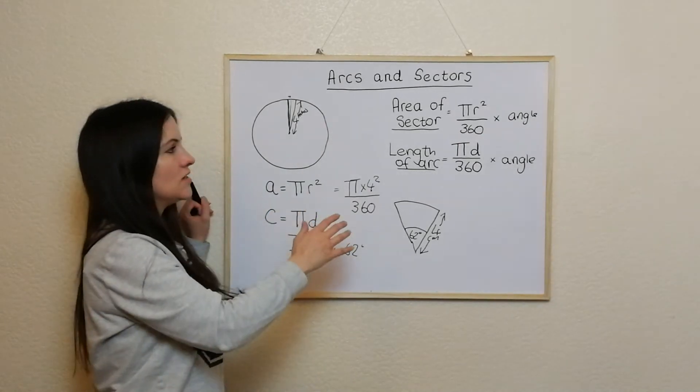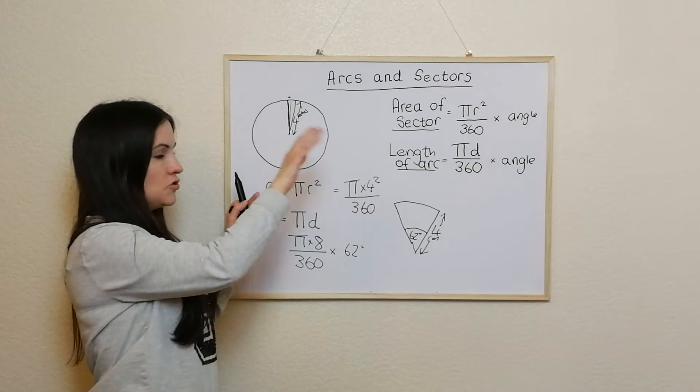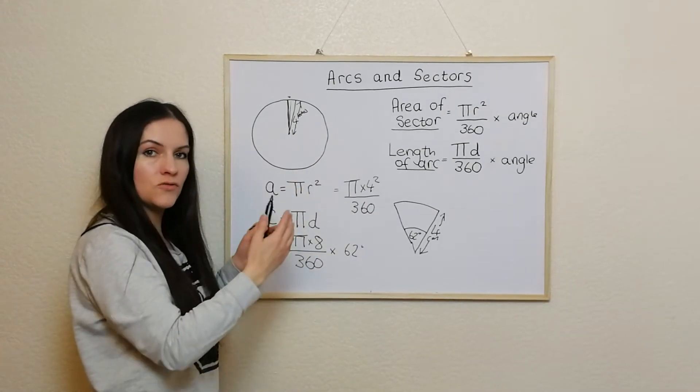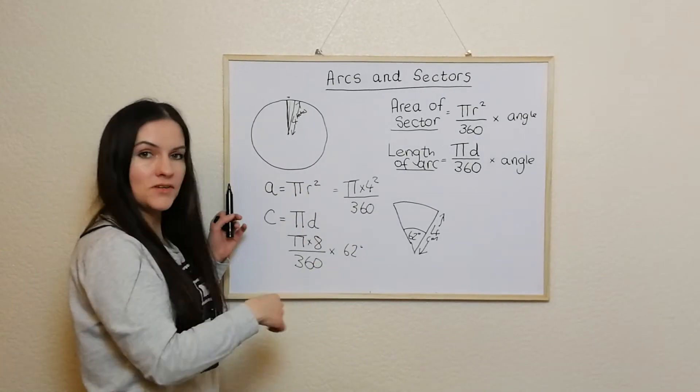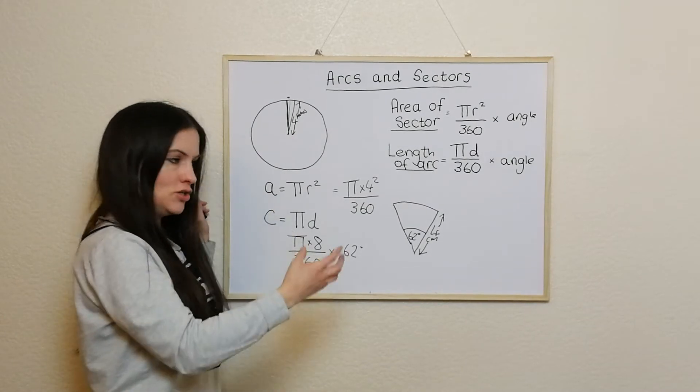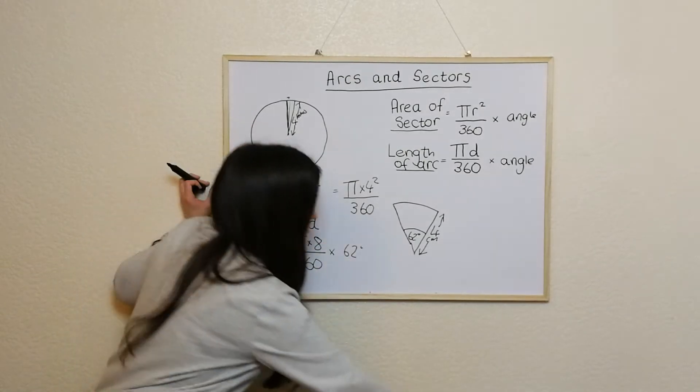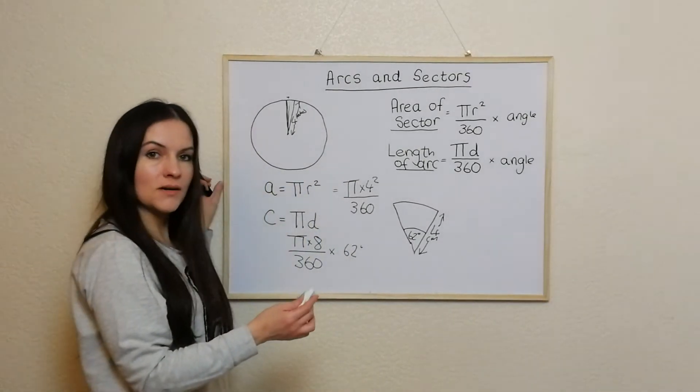Just to reiterate there, the area of a sector is, if you're imagining it, the full circle first of all, the area of the full circle, divide it by 360 to get the area of one degree, and then once you've got that answer you just times it by the angle that you've got that you need to find out. Okay, we'll use some examples.